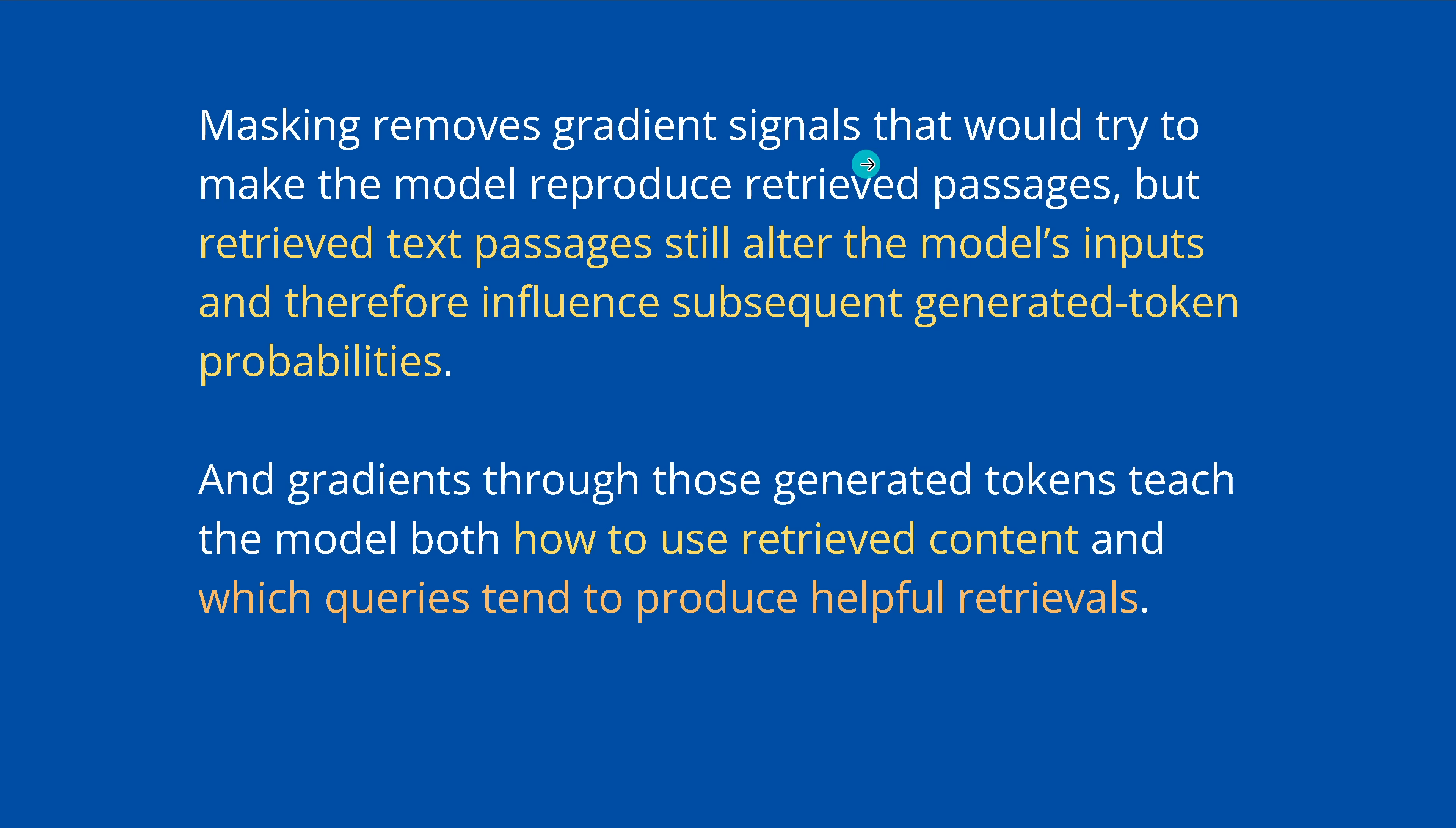But if you respect it and you are careful about this, we get some beautiful results. The masking removes the gradient signal that would try to make the model reproduce the retrieved passages, but the retrieved passages themselves, they still alter the model's input and therefore influence the subsequent generated token probabilities. So the information that we retrieve from this new RAG is integrated into the reasoning process. But it is not steering via the gradient optimization the behavior of the model, because it understands it has not to train on the content only, but because it has to be trained on when to go to a tool use, how to do it, how to operate it, and how to best handle the result that comes back. So the gradients through those generated tokens teach the model both how to use the retrieved content and which queries tend to produce helpful retrievals.